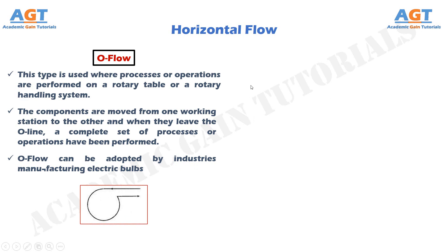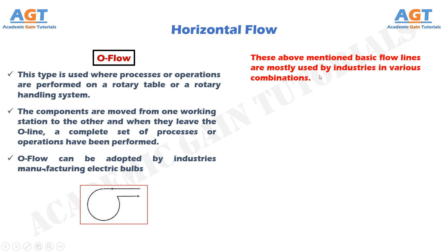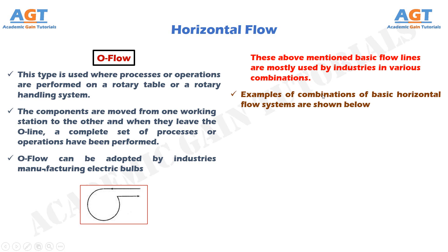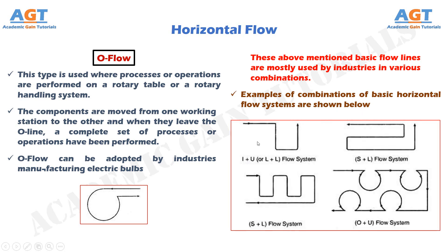These basic flow lines are mostly used by industries in various combinations. Examples of combinations of basic horizontal flow systems are shown in the figure below. We can see a combination of I plus U flow, or L plus L flow; a combination of S plus L flow; another combination of S plus L flow; and a combination of O plus U flow patterns.